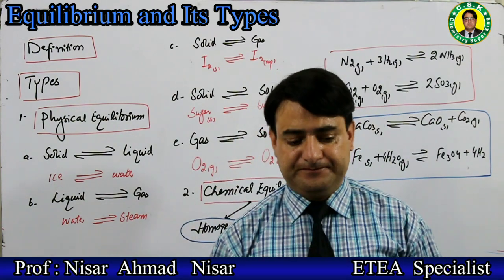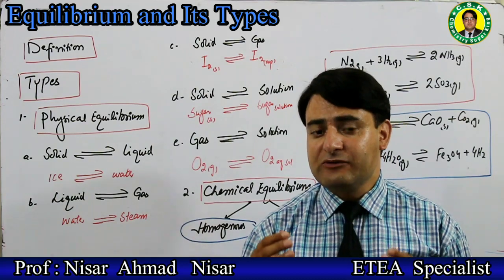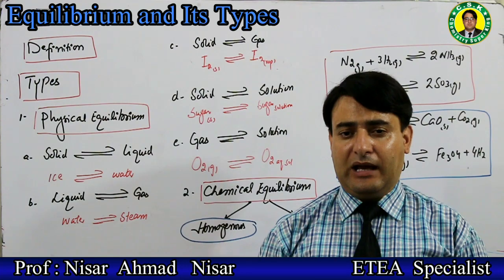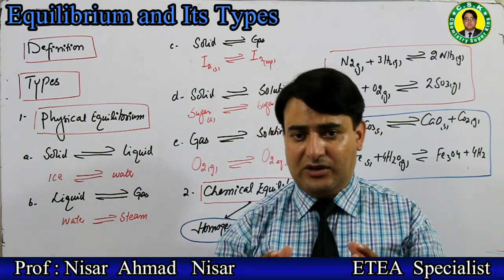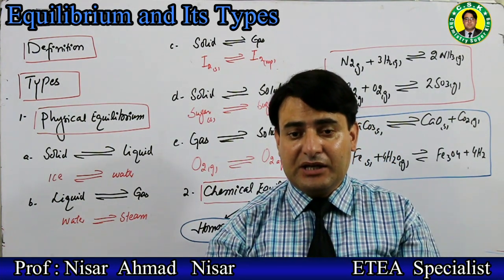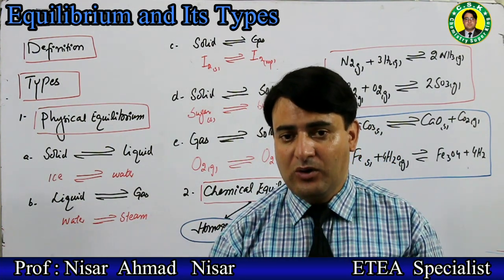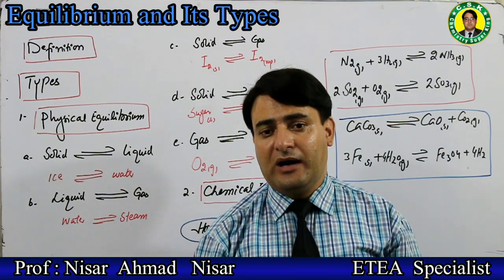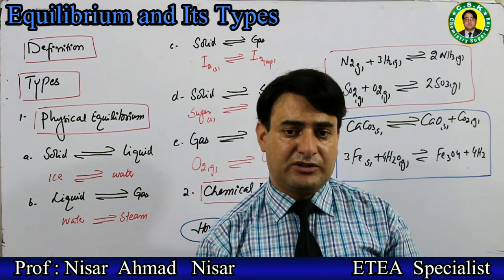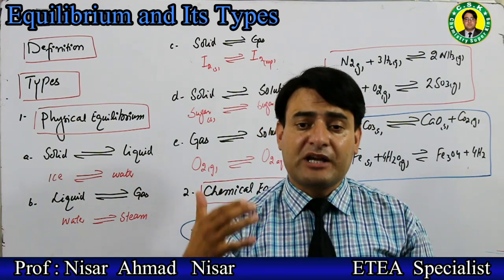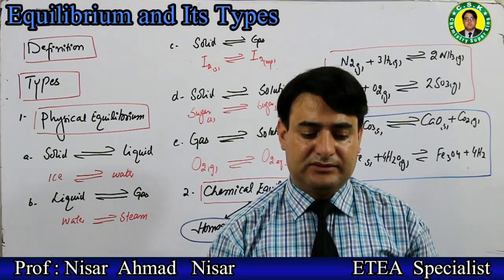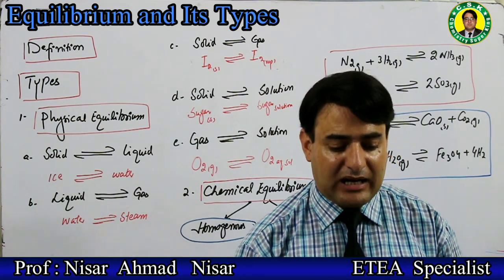So what is equilibrium? Equilibrium is that stage or point at which two opposing phenomena occur simultaneously at an equal rate. That stage or point we call equilibrium. The stage or point where two opposing phenomena occur simultaneously with equal rate is called equilibrium.